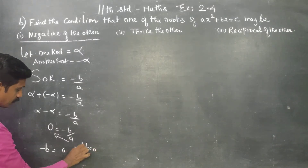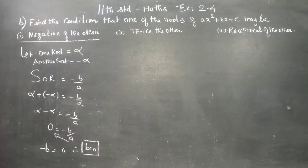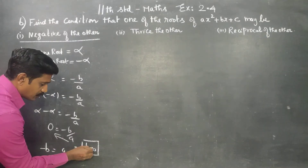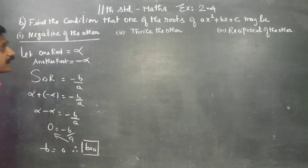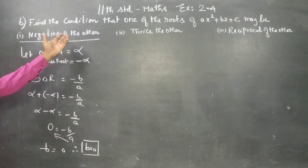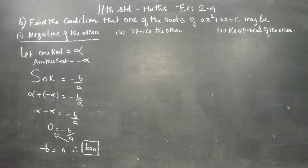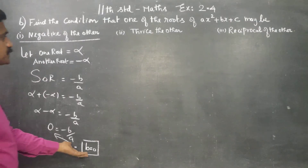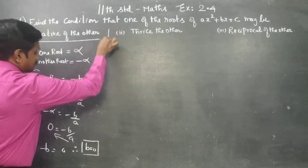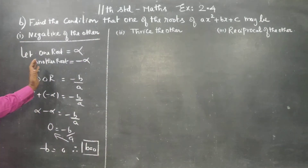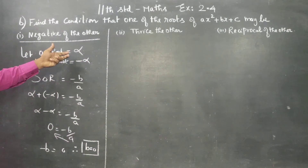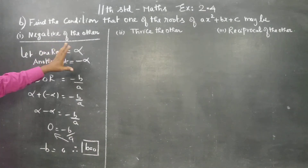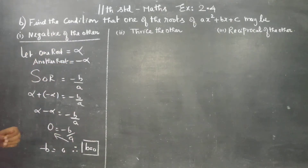Cross multiplying, 0 into anything is 0, therefore minus b equals 0, and therefore my final condition is b is equal to 0. This is the condition: if one root and another root just change by sign, the condition fulfilled is b equal to 0.